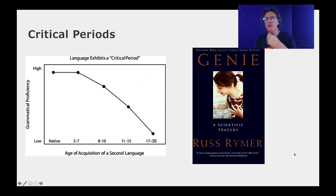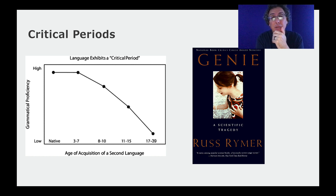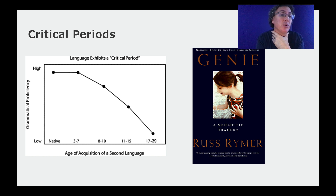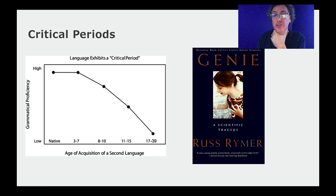Let me jump to Genie. The story of Genie is one of the real sad stories in psychology. Genie was, from basically not long after birth, locked into a closet. Her parents pretended she didn't exist and kept her separated from everything. They would feed her and take care of her basic needs, but she grew up in a closet until she was discovered at 13 years old.